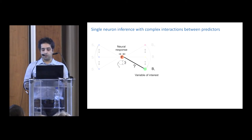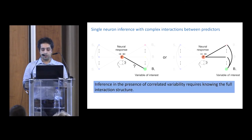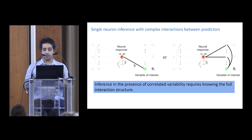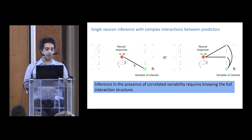As an example, if we want to infer whether a particular variable of interest is actually represented in the neural response, or whether its correlation with neural activity is a consequence of its covariation with other variables in the task, we need models which have enough information about the full dependency structure. The first-order direct dependencies would not be enough to distinguish between these two information pathways.